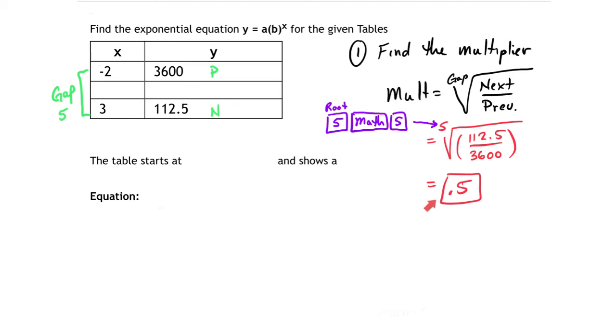Now that you've figured out what the multiplier is, we need you next to find the zero term. Now realize the multiplier is basically saying when you multiply by 0.5, that tells you the next term down the table.